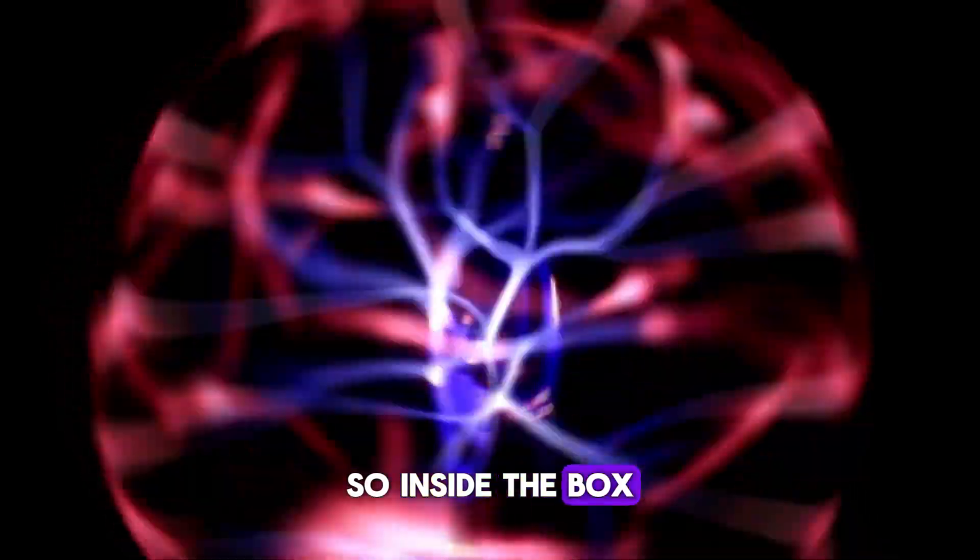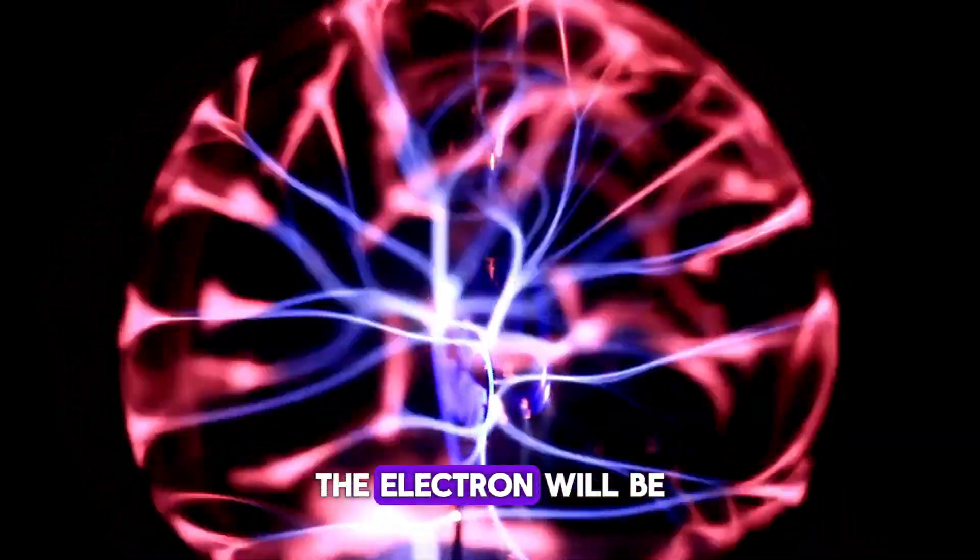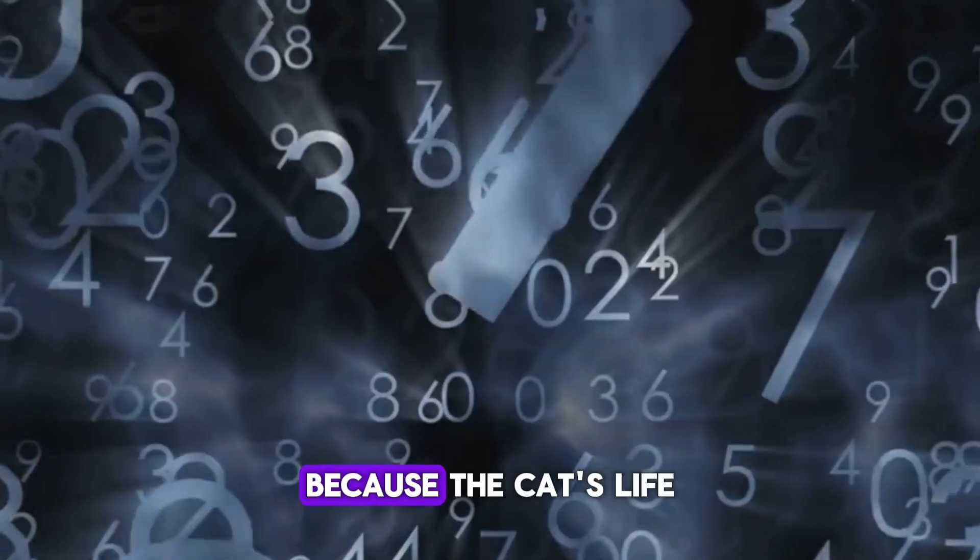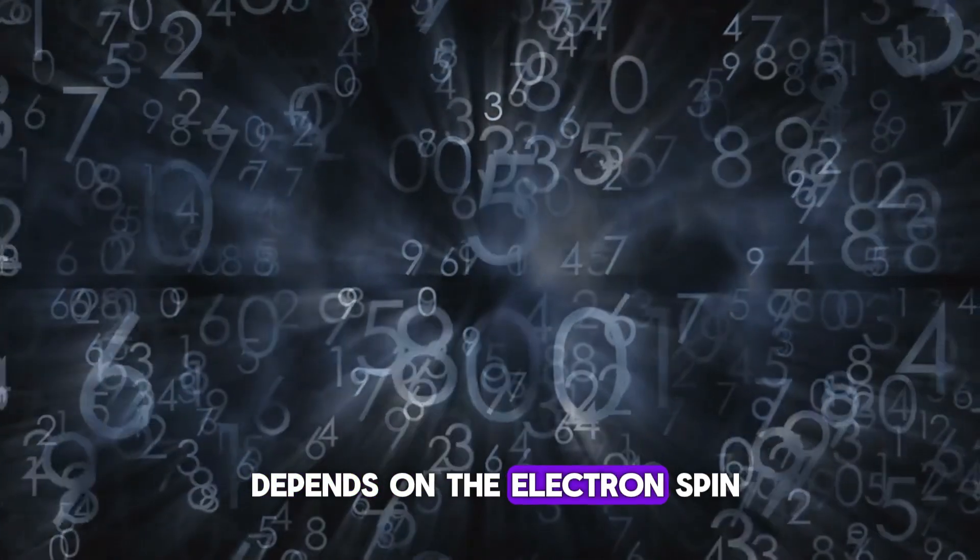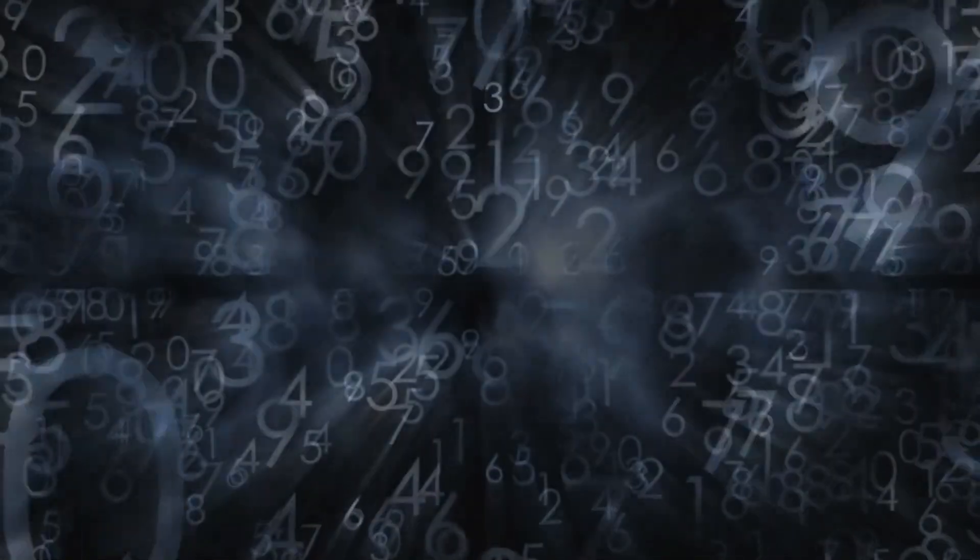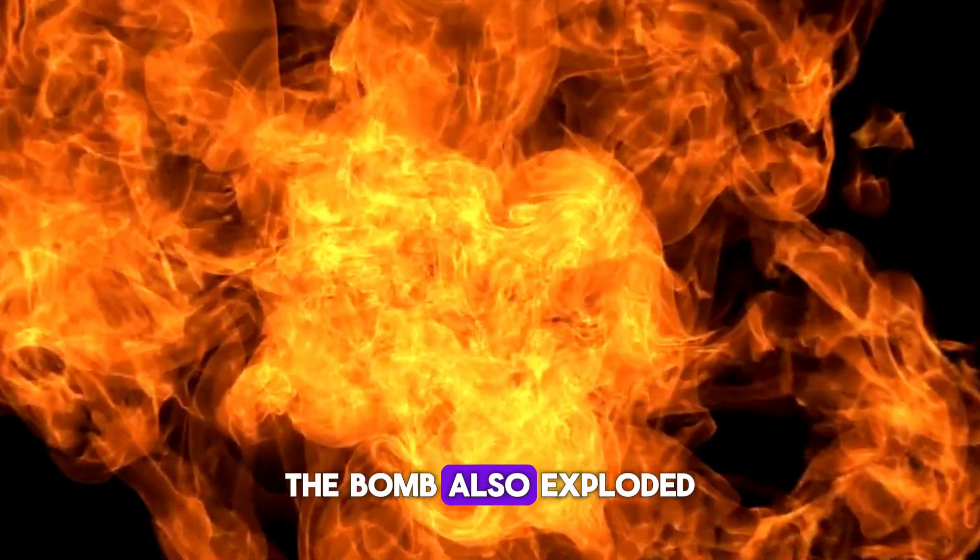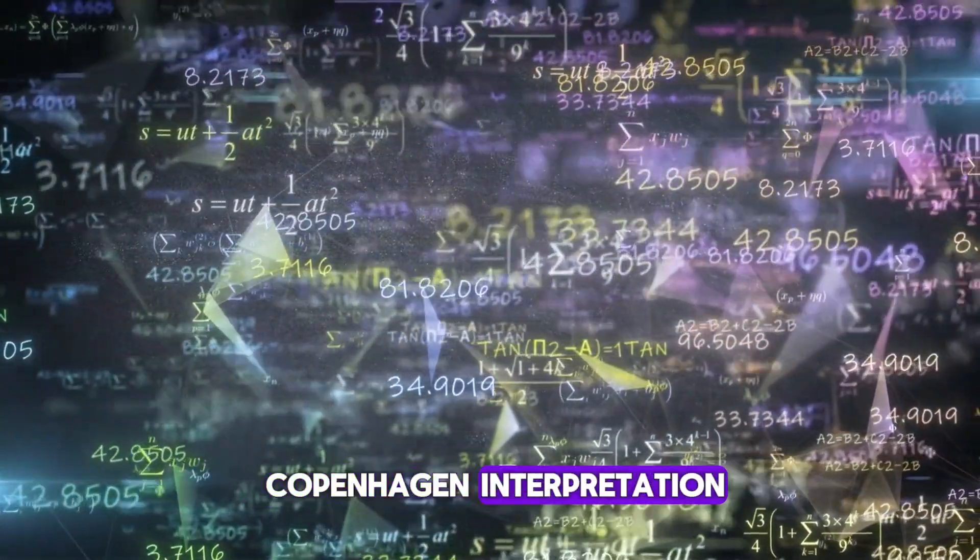So inside the box, if not being observed, the electron will be in a superposition and spin both ways at the same time. Because the cat's life depends on the electron's spin, it would also exist in two states, alive and dead at the same time. The bomb also exploded and not exploded at the same time. This is called the Copenhagen interpretation. And there is a good chance that it is wrong.